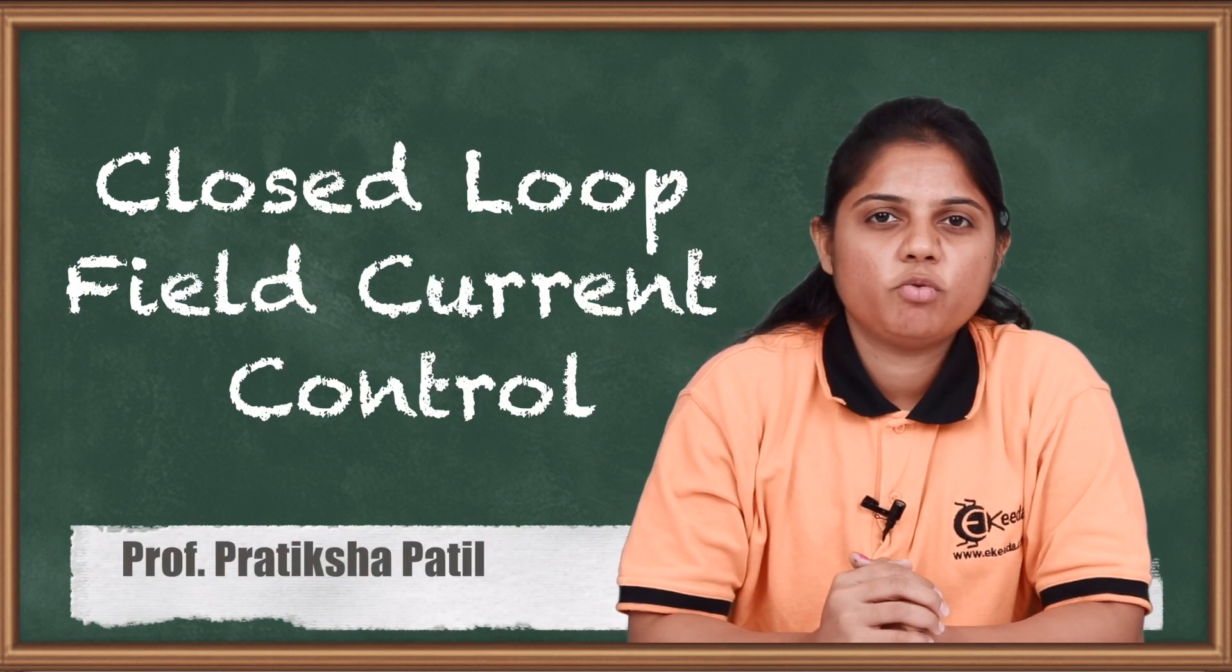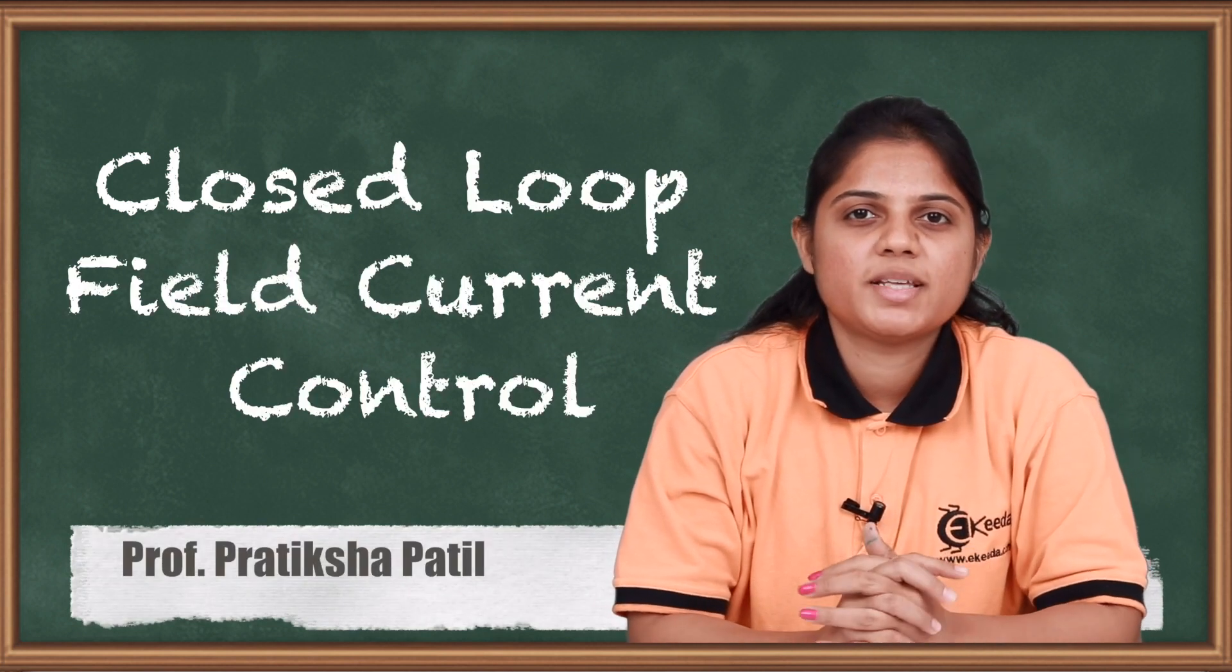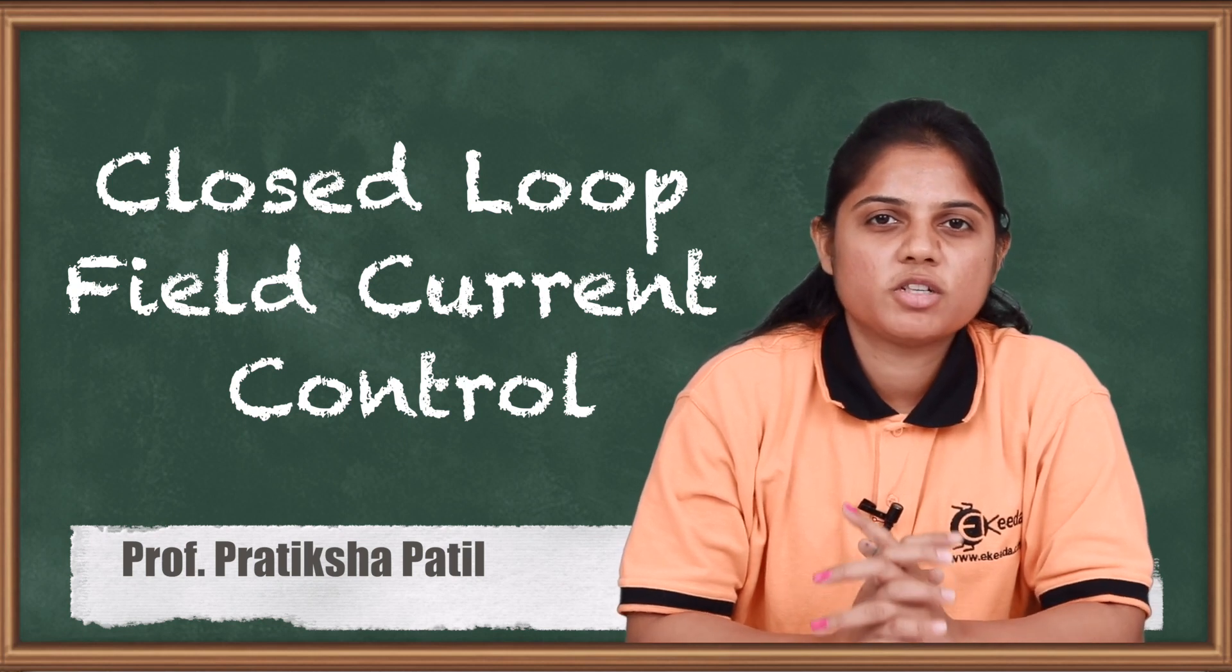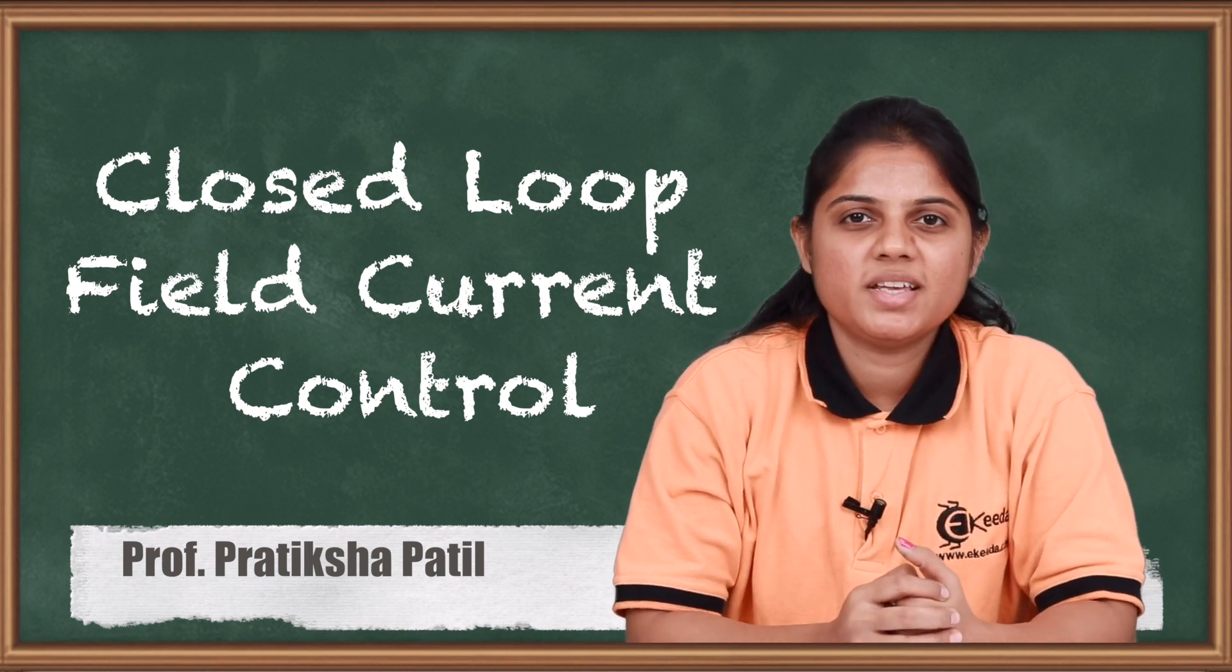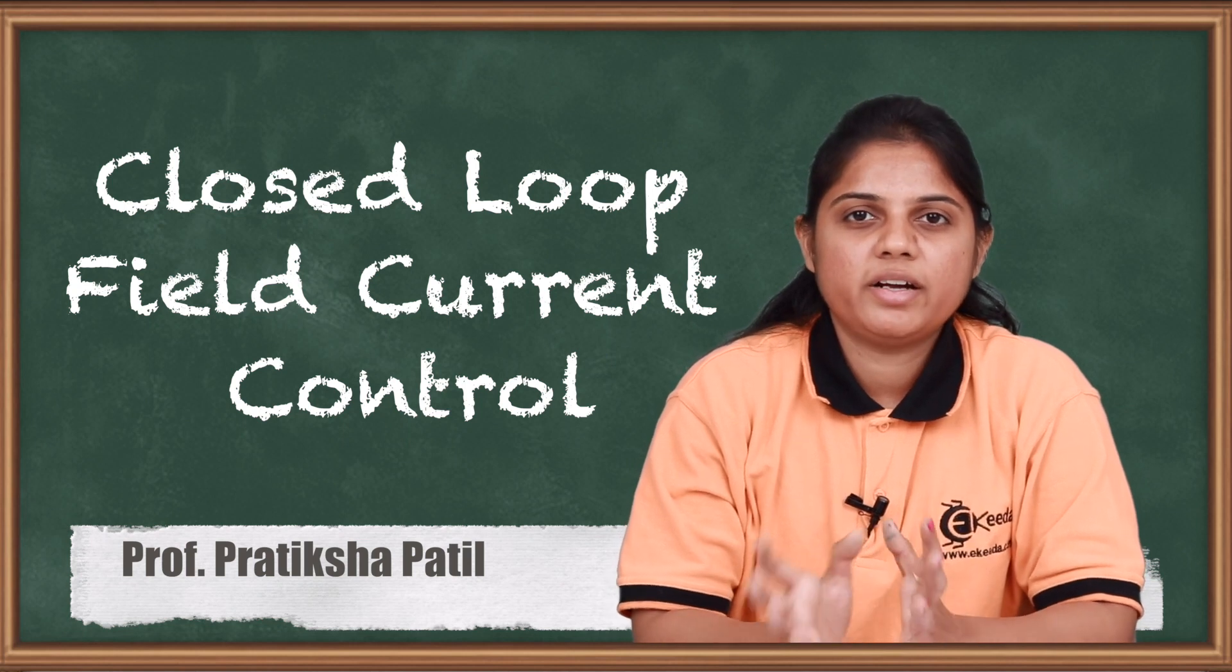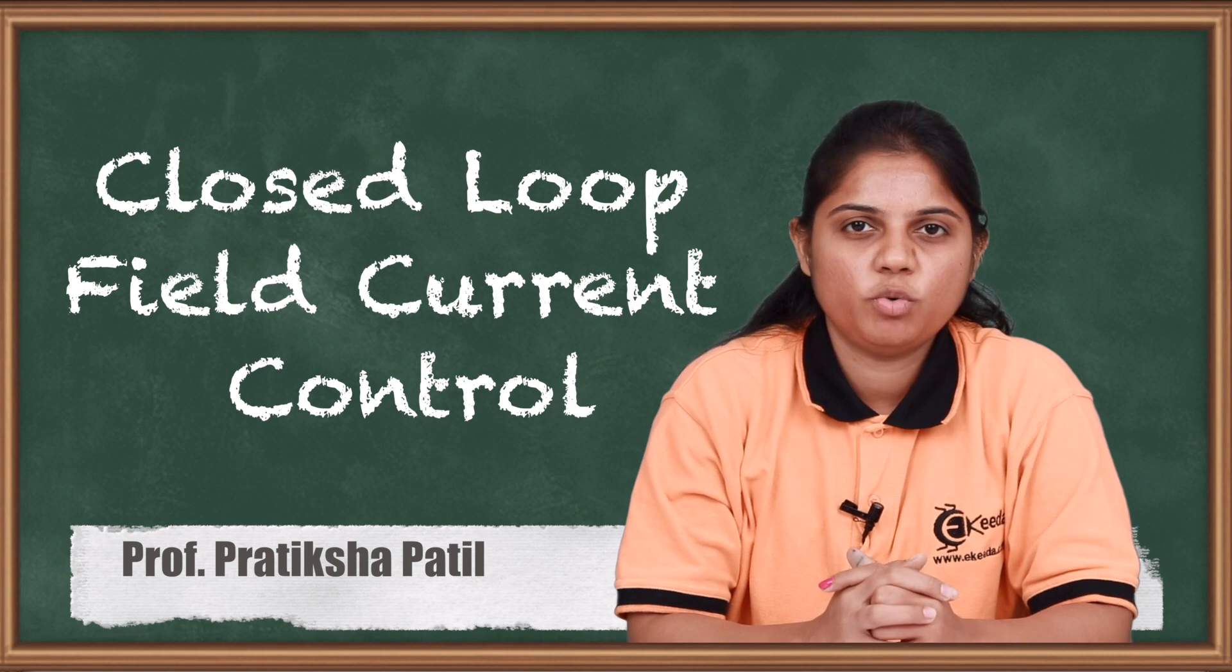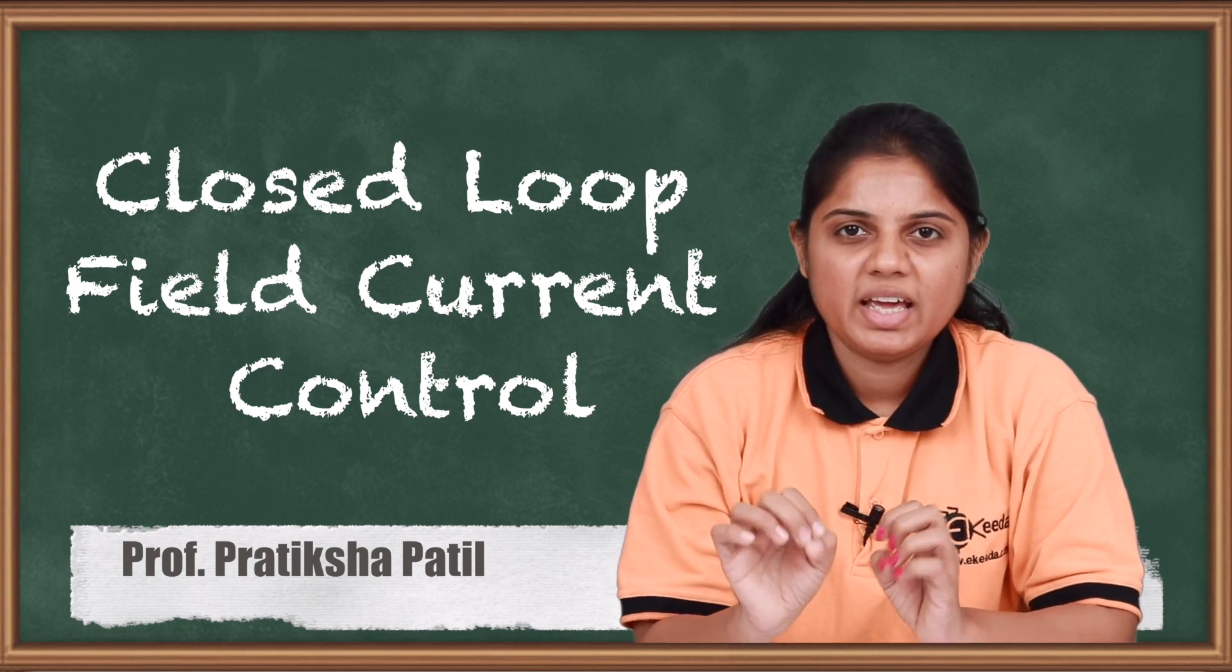Hello friends, in this video we are going to see the second part of a separately excited DC motor. That is the constant horsepower region, or you can say field current control. How you can vary field current to control the speed of the motor, that we are going to see in this video.